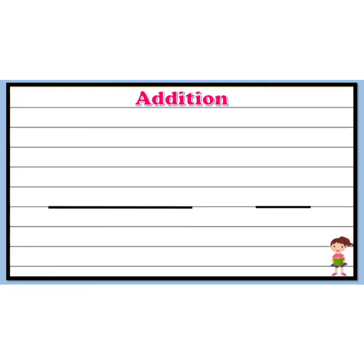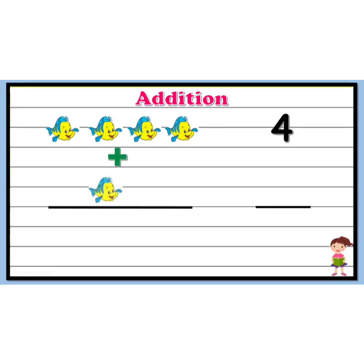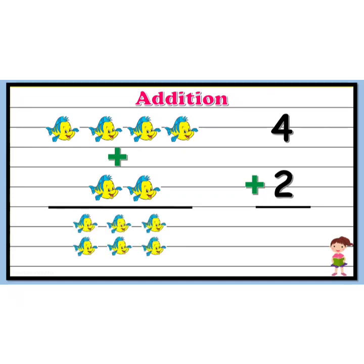Let's take another example. Let's start counting the number of objects: one, two, three, four — so here we have four fishes — plus one, two, so here we have plus two fishes. We have to find the total number of fishes. Let's count: one, two, three, four, five, six. Totally we have six fishes. So, four plus two gives six.